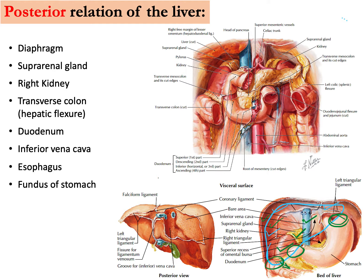A very important large vein posteriorly is the inferior vena cava. To summarize the structures located behind the liver: the diaphragm, the right kidney, the right suprarenal gland, the hepatic flexure and part of the transverse colon, the first part of the duodenum, the fundus of the stomach, the inferior vena cava, and the esophagus.